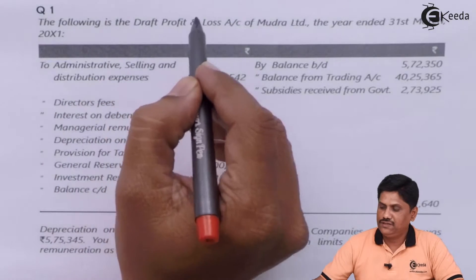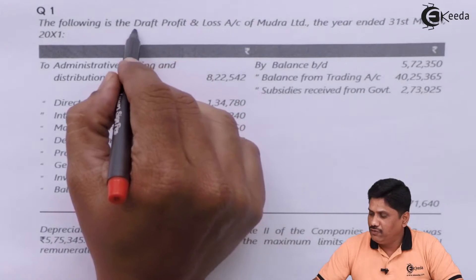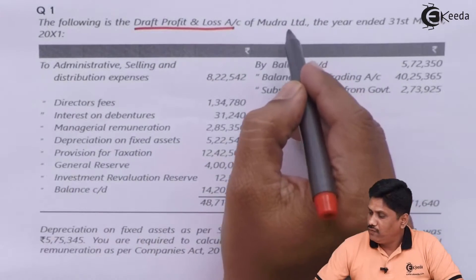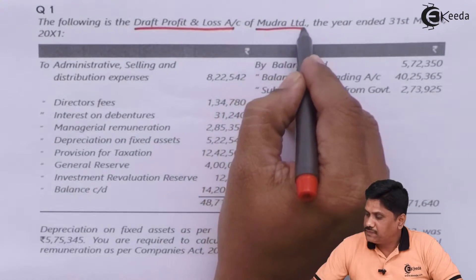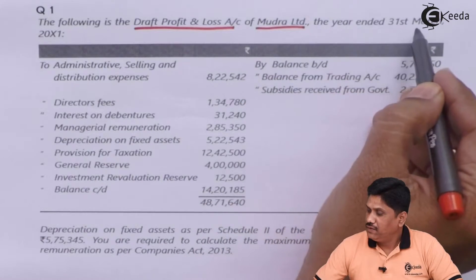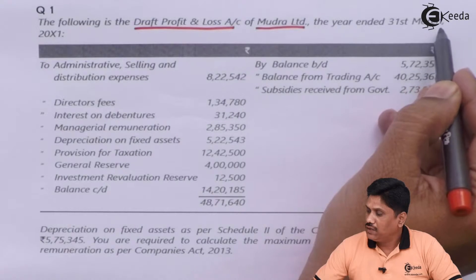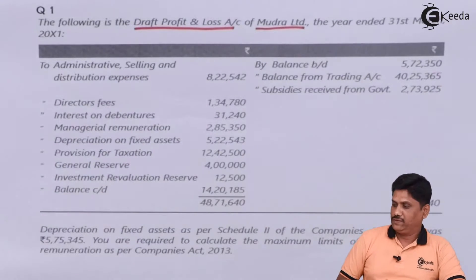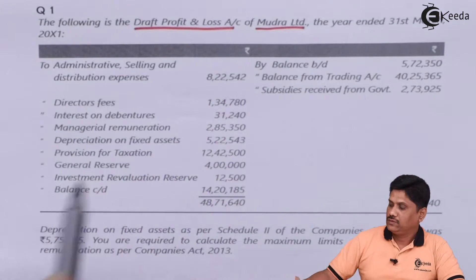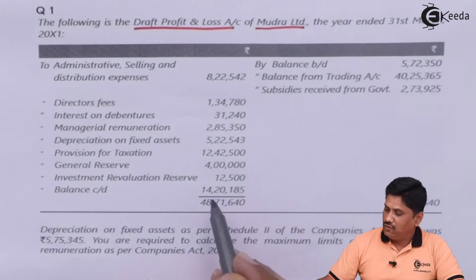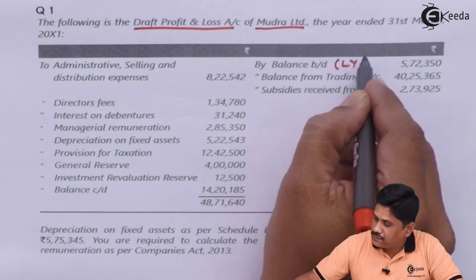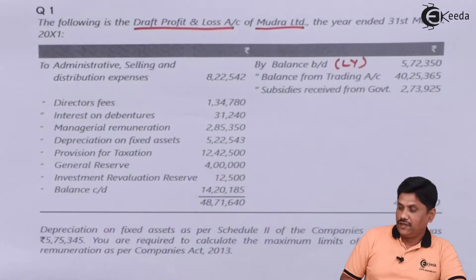Following is the draft P&L account. They have drafted the P&L account of Mudra Limited for the year ended 31st March 20X1. They gave you this P&L account, which includes the opening balance and closing balance of the P&L account — the closing balance must be from the last year.